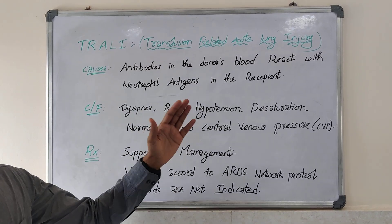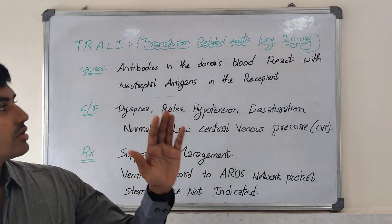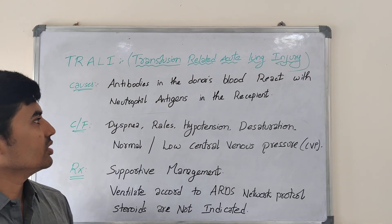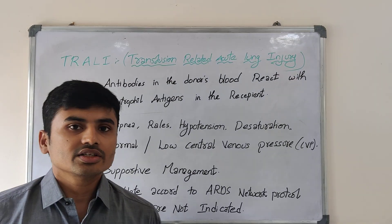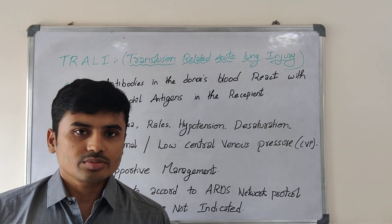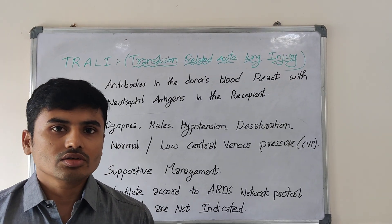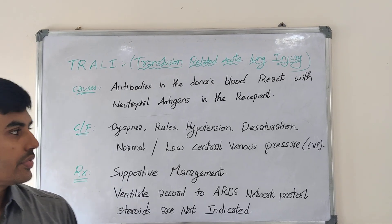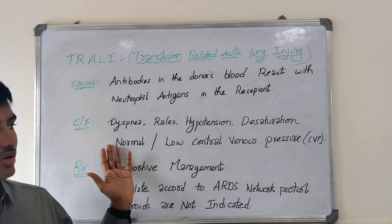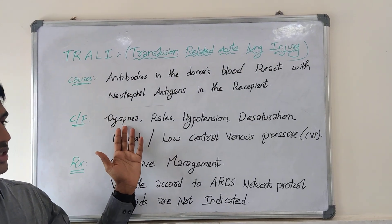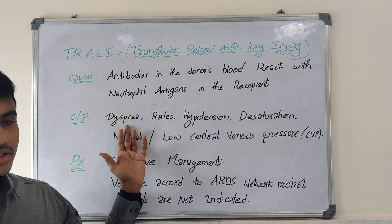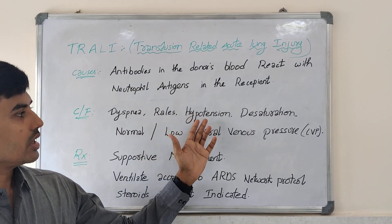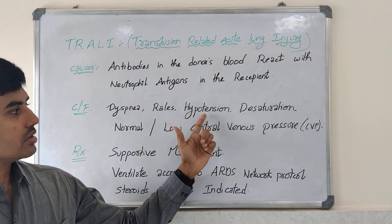The cause of TRALI is antibodies in the donor's blood reacting with the neutrophil antigens in the recipient. Clinical features of TRALI include dyspnea, breathlessness, crackles and crepitations on auscultation, and hypotension.